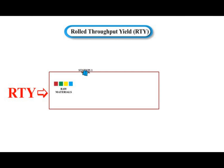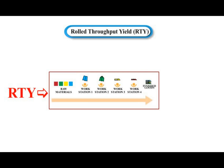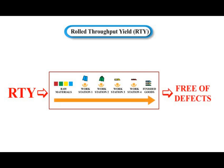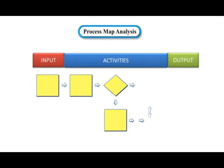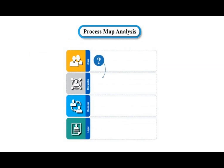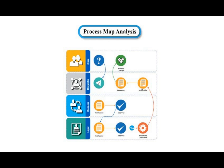Rolled Throughput Yield is the probability that a single unit can pass through a series of process steps free of defects. A process map is a detailed flow diagram of the process using color-coded symbols. It captures all the complexity and improvement opportunities by analyzing each step in detail.